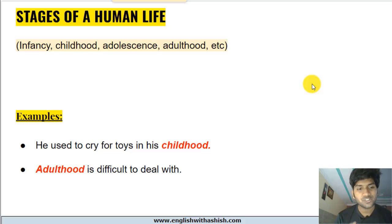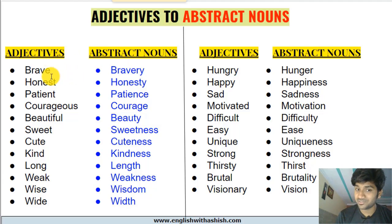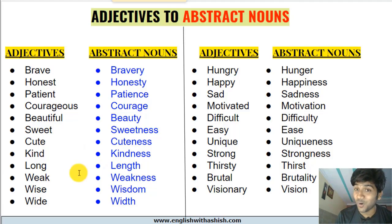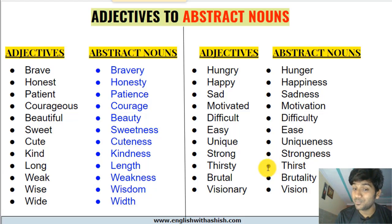Now, some important points: you can form abstract nouns from adjectives, verbs, and sometimes common nouns. Adjectives to abstract nouns — brave → bravery, honest → honesty, patient → patience, courageous → courage, beautiful → beauty, sweet → sweetness, cute → cuteness, kind → kindness, long → length, weak → weakness, wise → wisdom, wide → width, hungry → hunger, happy → happiness, sad → sadness, motivated → motivation, difficult → difficulty, easy → ease, unique → uniqueness, strong → strength, thirsty → thirst, brutal → brutality, visionary → vision.